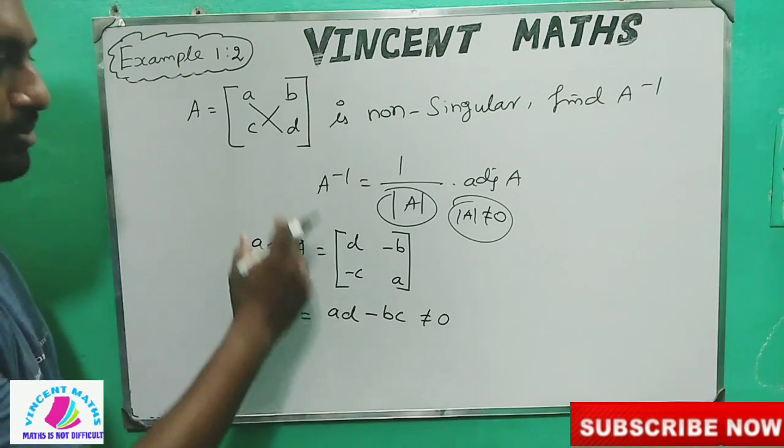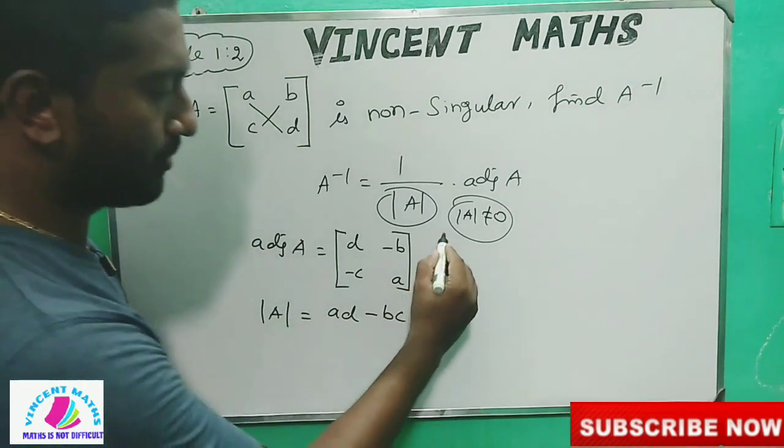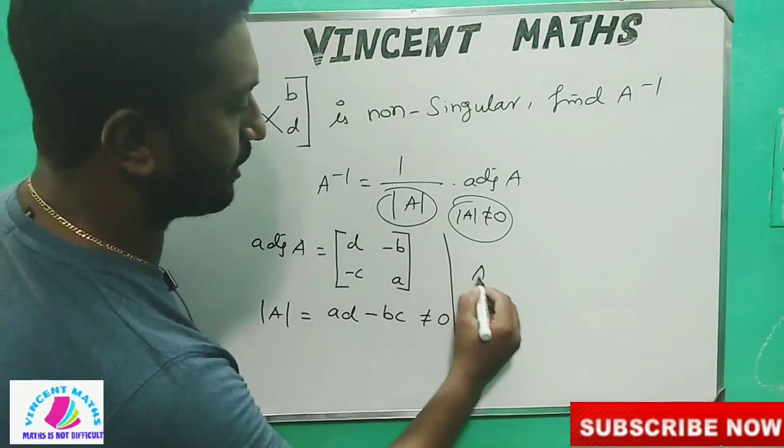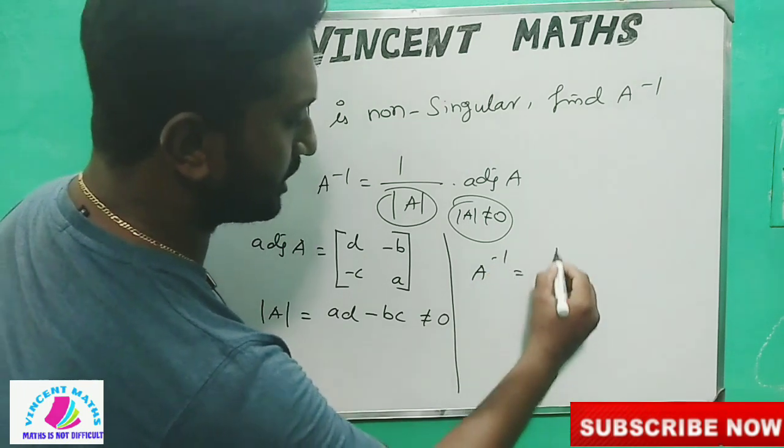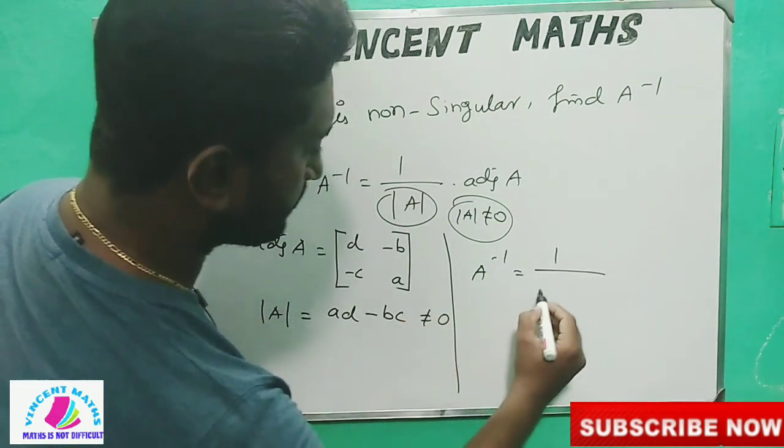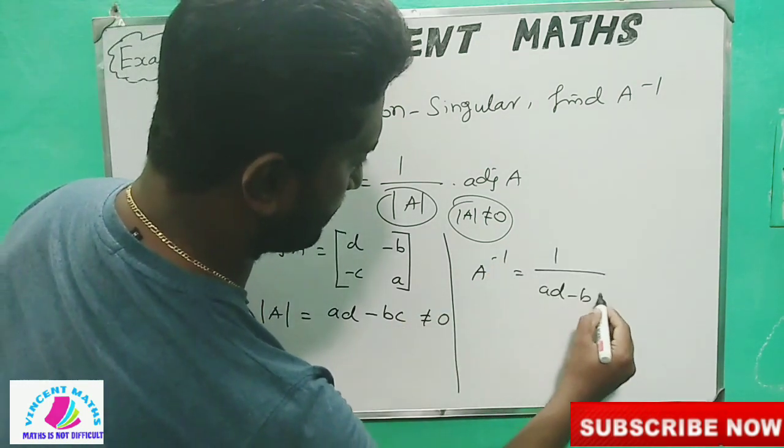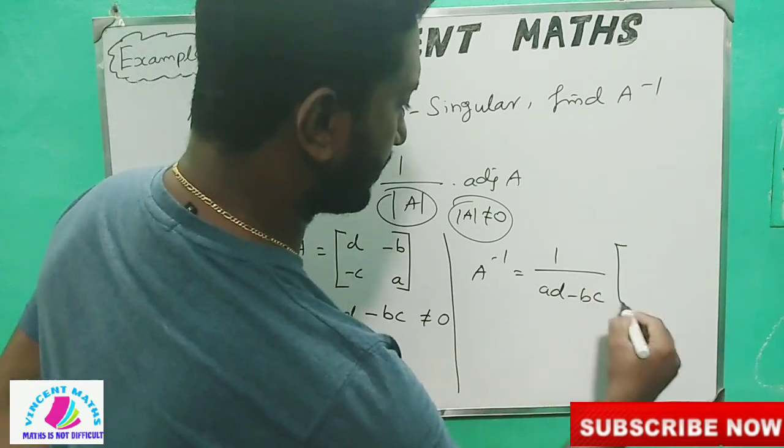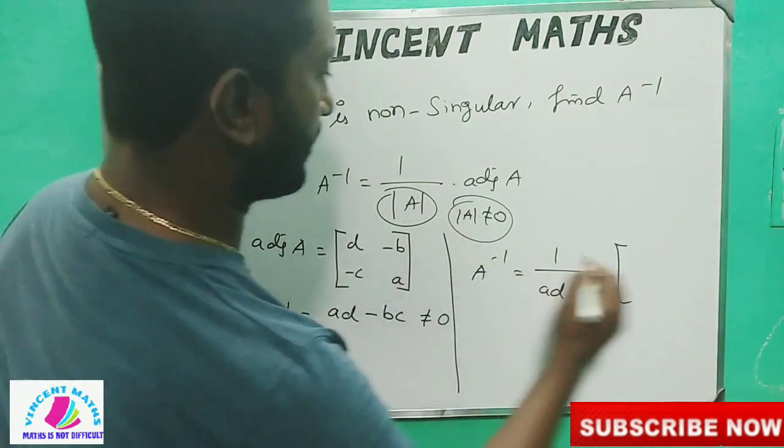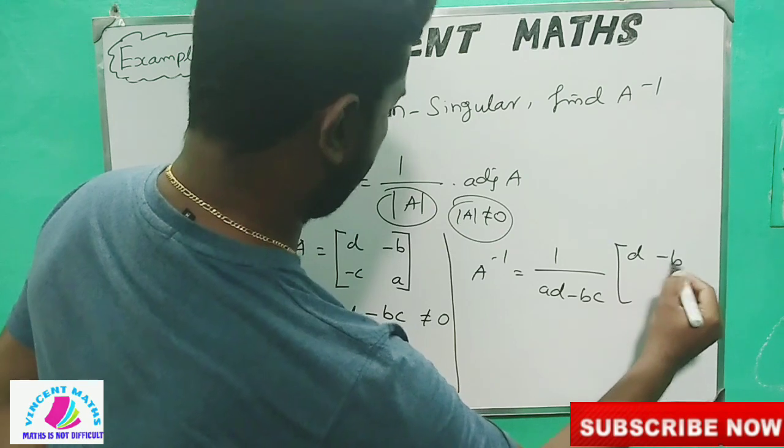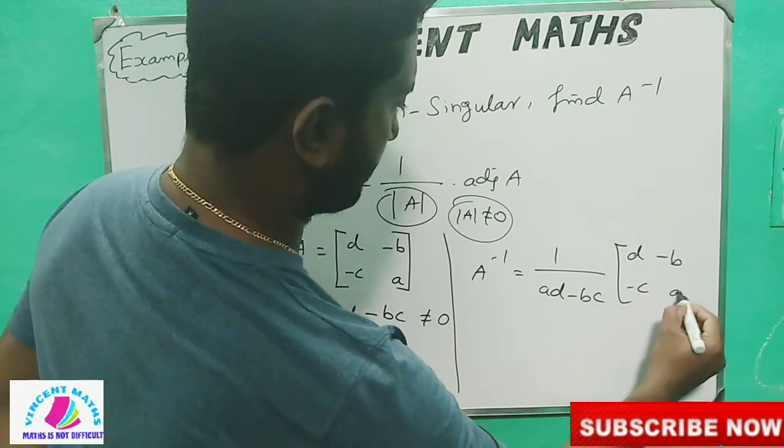A inverse equal to 1 by AD minus BC into adjoint of A. That is adjoint of A - D minus B, minus C A.